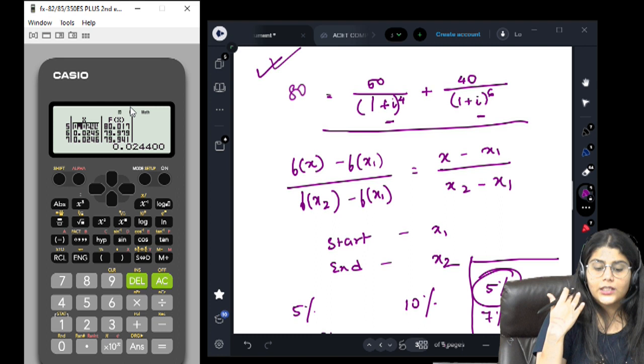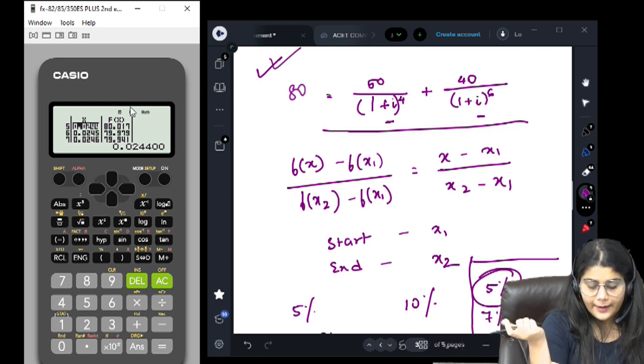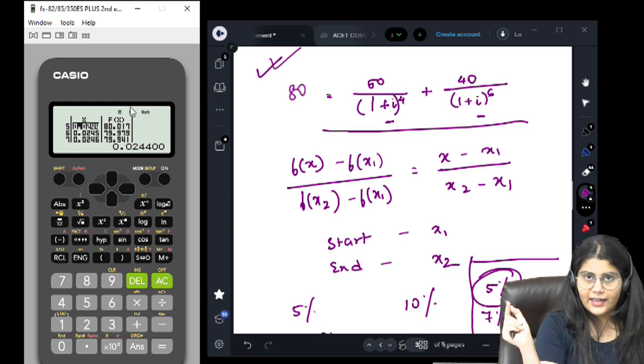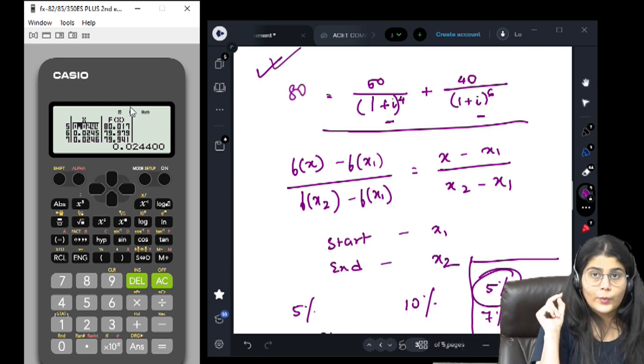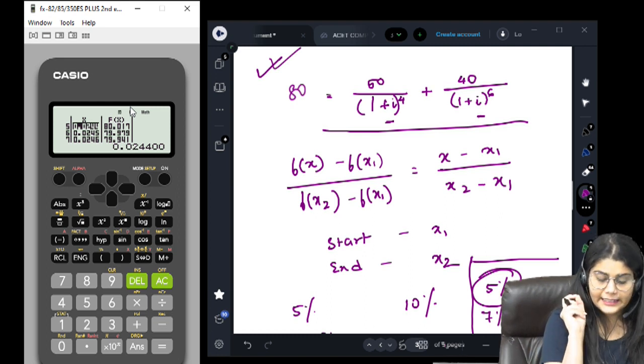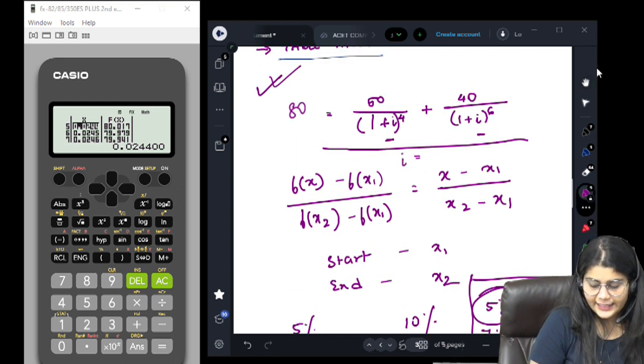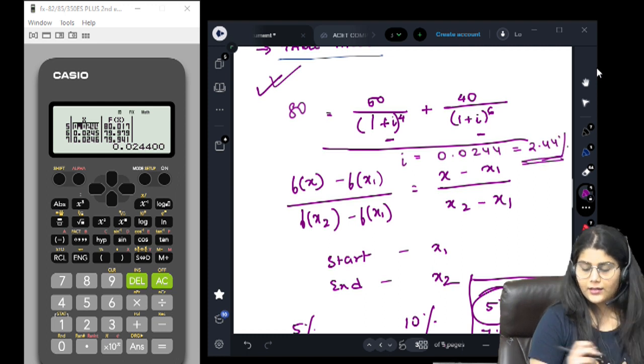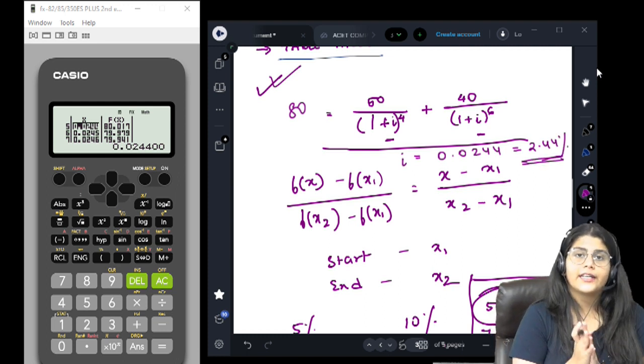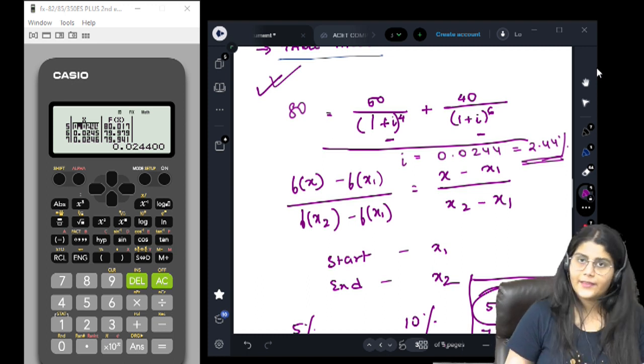80.017 is 17 steps ahead and 79.979 is actually 21 steps behind from the figure which we want, that is 80. That means we will take the answer as i equal to 0.0244, which is 2.44%. That is about the table mode which we can use very easily and efficiently for interpolation. Thank you all of you.